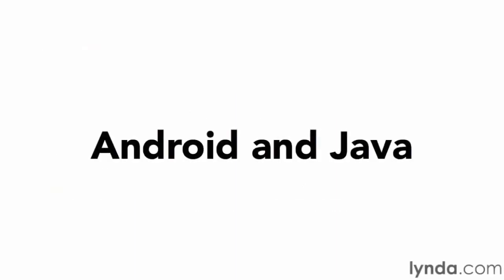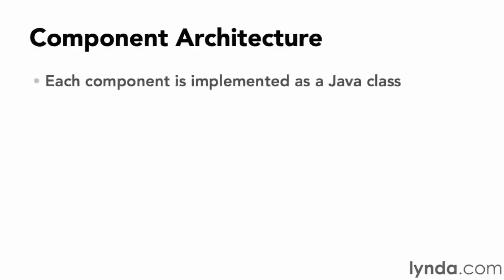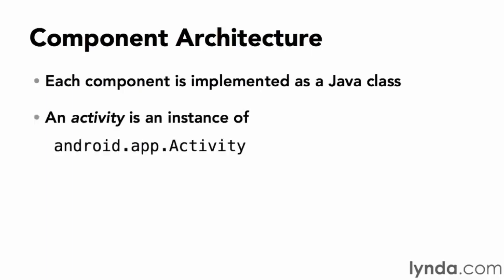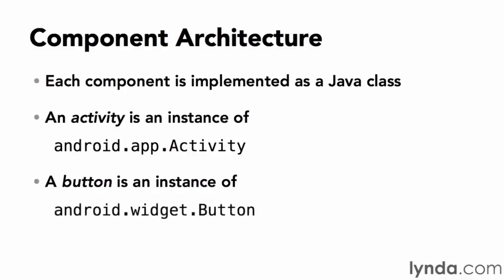Each component in an Android app is implemented as a Java class. Custom apps use both the Java classes included in the SDK and your own custom Java classes. For example, an activity is an instance of the Java class Android.app.Activity, and a button is an instance of Android.widget.Button. There are thousands of different Java classes and interfaces in the Android SDK, and you'll be creating your own Java classes to represent your app's components.